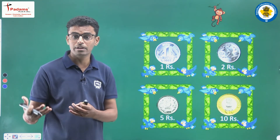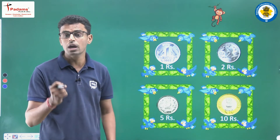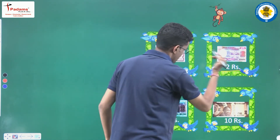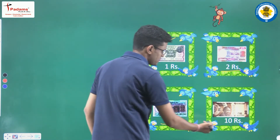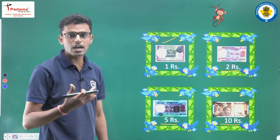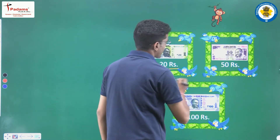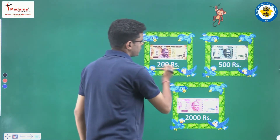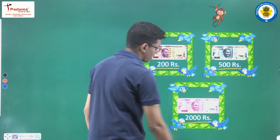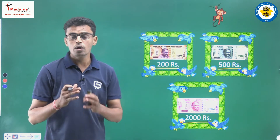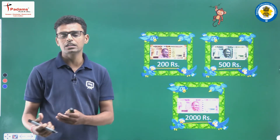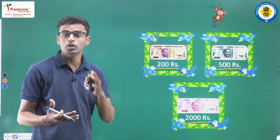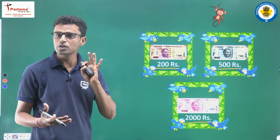Apart from coins, our currency also has notes — paper notes. There is a one rupee note, two rupees, five rupees, and ten rupees note. Beyond that, there are many more notes: twenty rupees, fifty rupees, hundred rupees, two hundred rupees, five hundred rupees, and two thousand rupees. So Indian currency used for buying and selling includes both coins and notes.